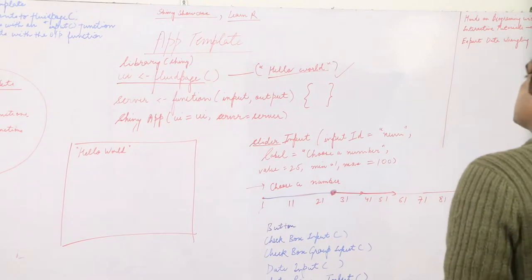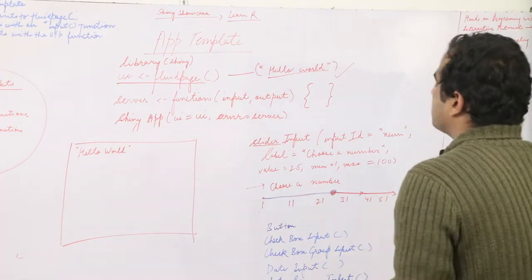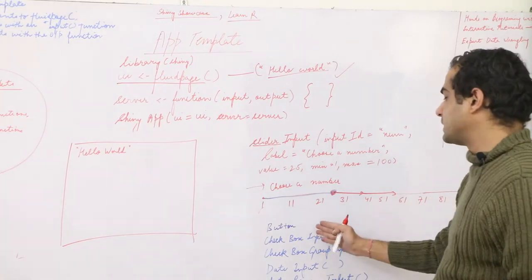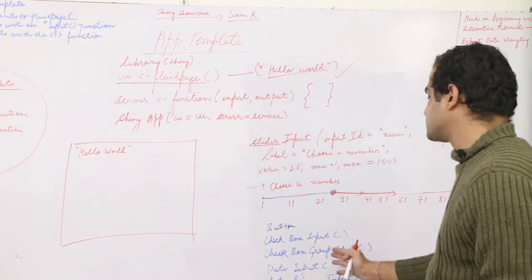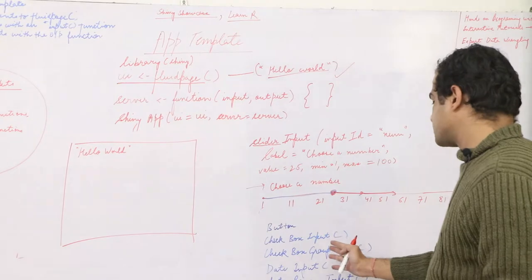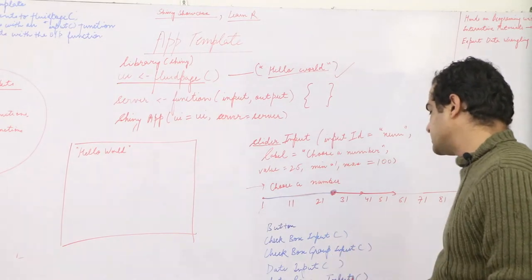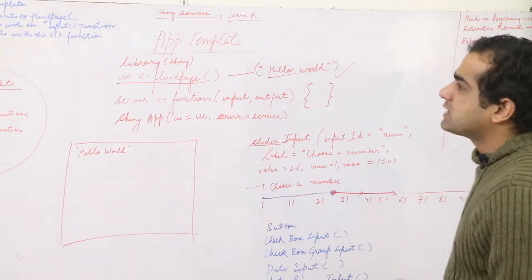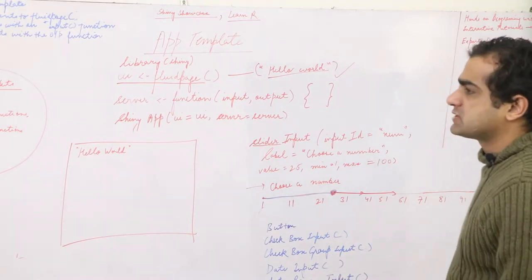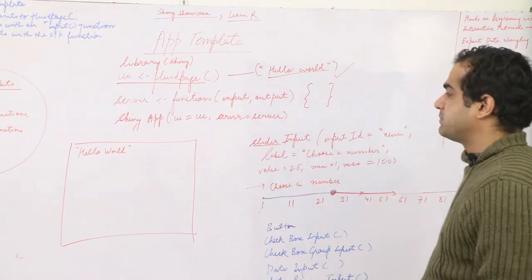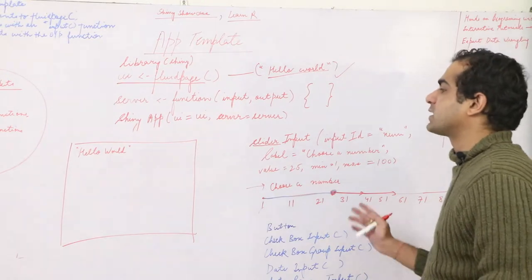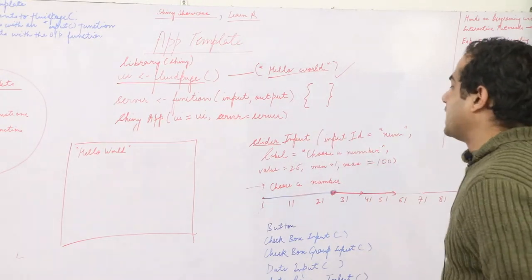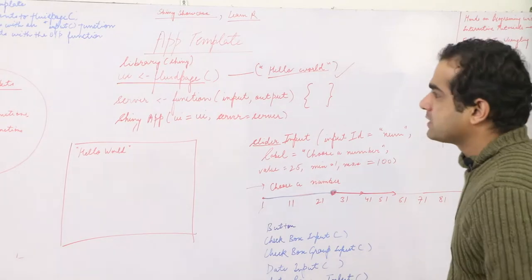You can also simultaneously define multiple inputs, such as button, checkbox, checkboxGroupInput, dateInput, dateRangeInput, and passwordInput. All of these are available in the R Shiny library, where you can import them and utilize them in whatever format you want to make.